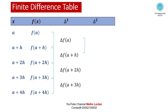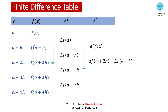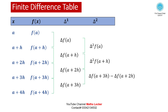Taking the second differences: delta² f(a) = delta f(a+h) - delta f(a), delta² f(a+h) = delta f(a+2h) - delta f(a+h), and delta² f(a+2h) = delta f(a+3h) - delta f(a+2h).